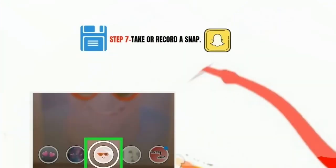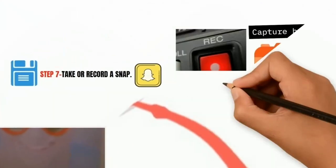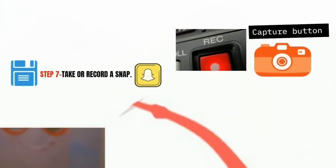Step 7: take or record a snap. Once you've found a lens you like, tap and hold the capture button to record yourself with that lens. If you'd rather just take a photo, tap the capture button once instead. Your lens effect will be recorded in the snap.